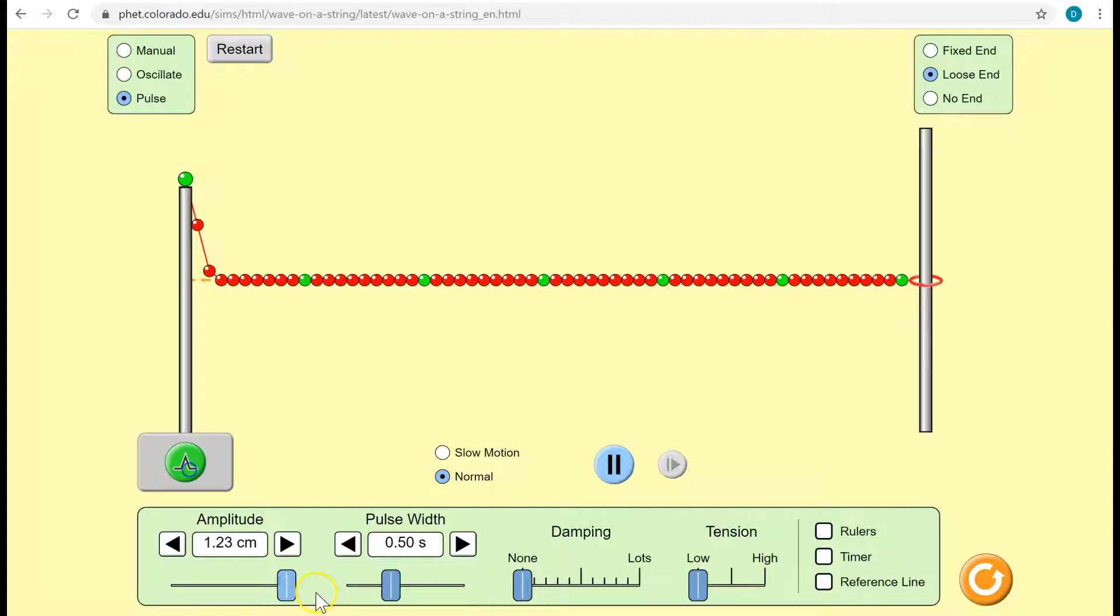If we send two waves toward each other, what happens is they interfere. As they approach, they have displacements that they produce in the medium, and at every point where they overlap, those displacements add together. That's called the principle of superposition.